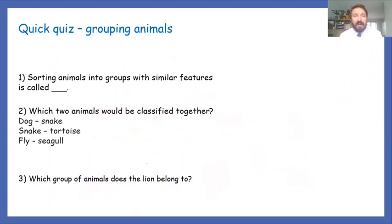Let's have a look. Number one: sorting animals into groups with similar features is called blank. Which two animals would be classified together? We've got a dog and a snake, a snake and a tortoise, and a fly and a seagull. I'm sure you know that one. Which group of animals does the lion belong to? Pause the video, come back after a minute or so, and then we'll have a look through these together.